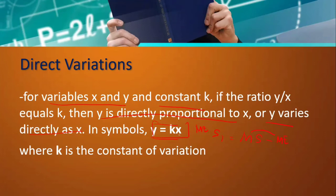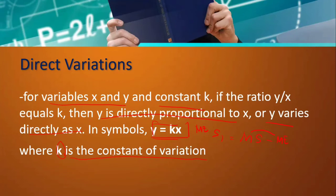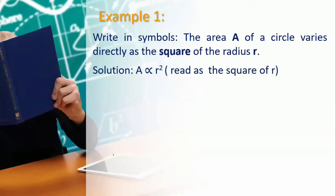In any variation — whether y varies directly, jointly, or inversely — there is always a constant k. The k in our equation is a small letter k, not capital K. If it were capital K, it would be called a variable, not a constant. So our k must always be a small letter.